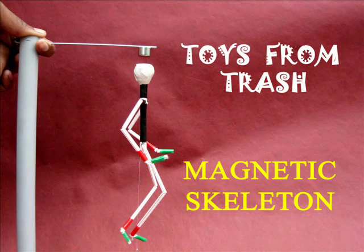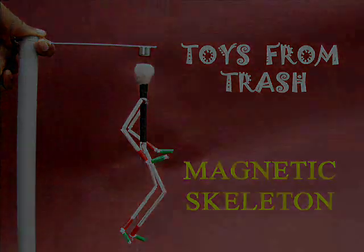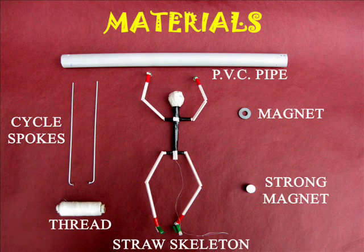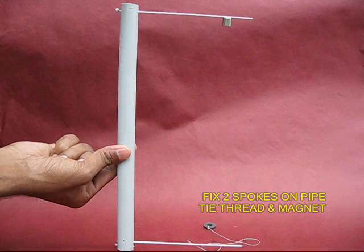You can make this spooky skeleton hang by a thread. For this you require a PVC pipe, two bicycle spokes, a strong and weak magnet, and some thread.